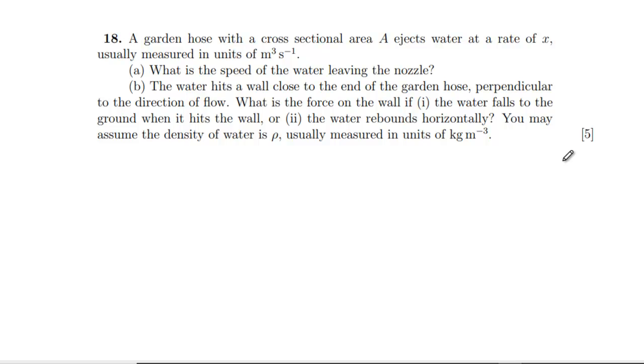Pushing on. We've got a garden hose cross-sectional area A ejecting water at rate of X, which is metre cubed per second. What's the speed of the water leaving the nozzle? So that's our A. In one second, we would have moved V metres worth of water through if it's moving at velocity V. Because if it's moving at velocity V, in one second it moves V metres. So that's going to be our volume. So X is going to be equal to A times V. So V is X over A. Doing a unit check on these just to make sure. So we want metres per second for V, and we've got metres cubed per second divided by metres squared. So that's fine.